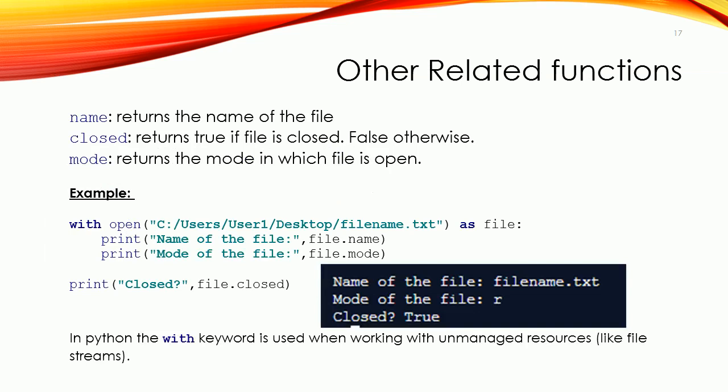Let's talk further about other related file attributes. The 'name' attribute returns the name of the file. 'closed' returns True if the file was closed, False otherwise. The 'mode' attribute returns the access mode — it can be 'r', 'w', 'a', 'b', and so on, as we studied at the beginning of this chapter.